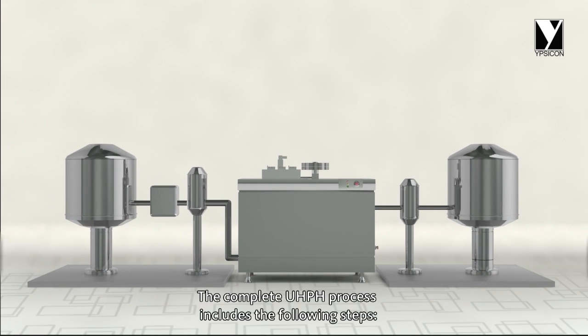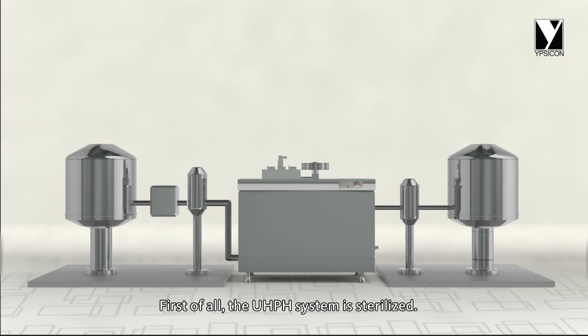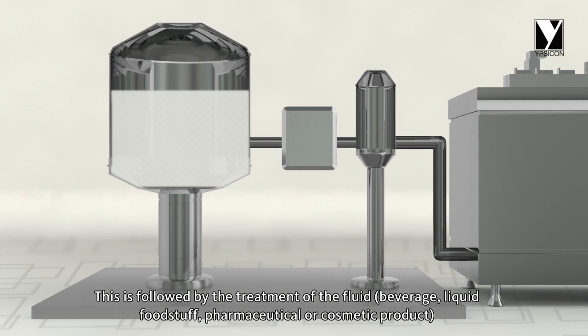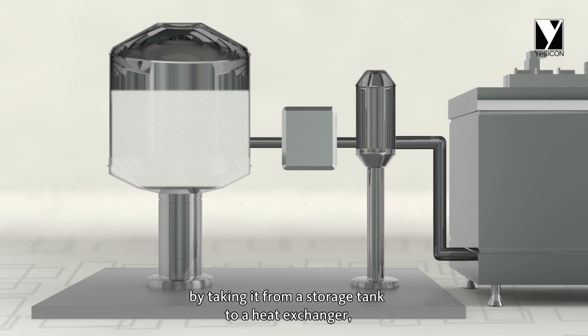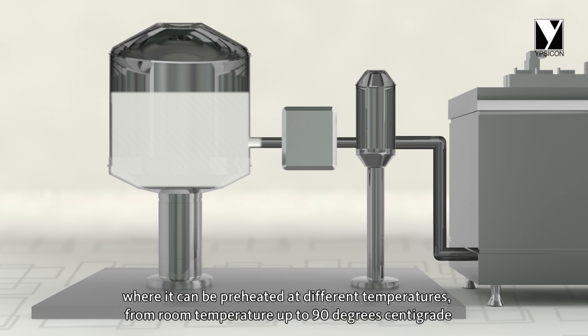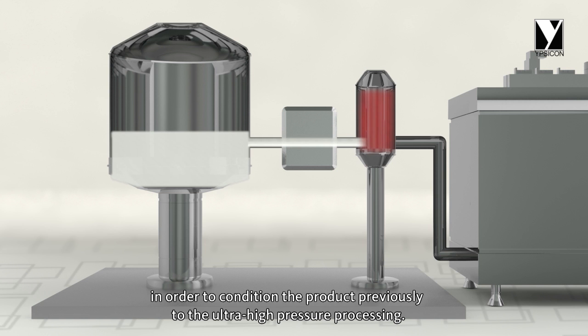The complete UHPH process includes the following steps. First of all, the UHPH system is sterilized. This is followed by the treatment of the fluid, beverage, liquid foodstuff, pharmaceutical or cosmetic product by taking it from a storage tank to a heat exchanger, where it can be preheated at different temperatures from room temperature up to 90 degrees Celsius in order to condition the product prior to ultra-high pressure processing.